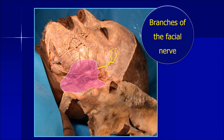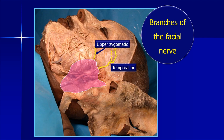The first branch is the temporal branch of the facial nerve. It goes to supply the frontal belly of the occipitofrontalis and the upper part of the orbicularis oculi muscle. Similarly, that is the zygomatic branch. Sometimes the zygomatic can be in 2 branches, called the upper zygomatic and the lower zygomatic as shown here, though in a textbook description it is generally shown as a single nerve.